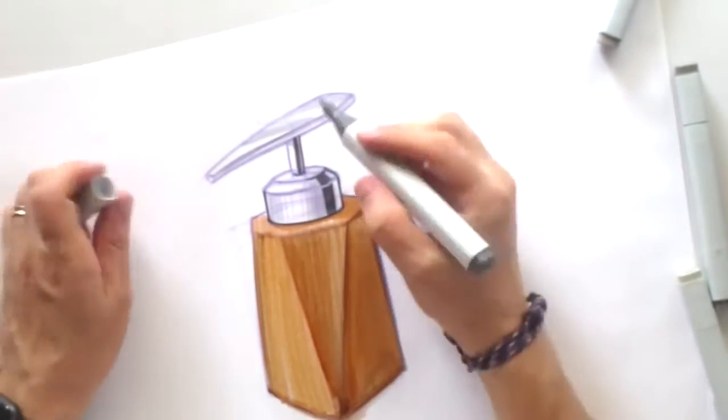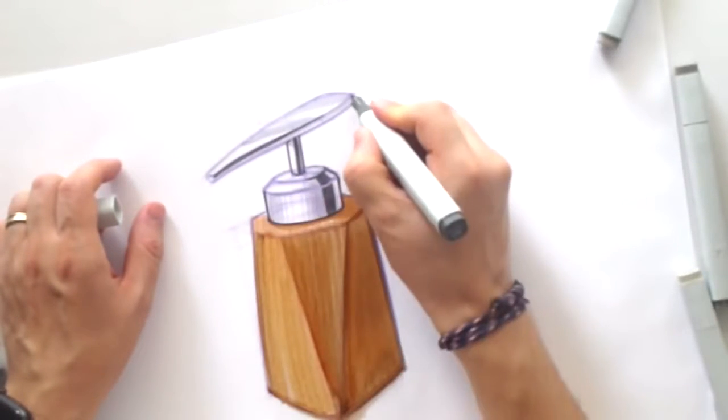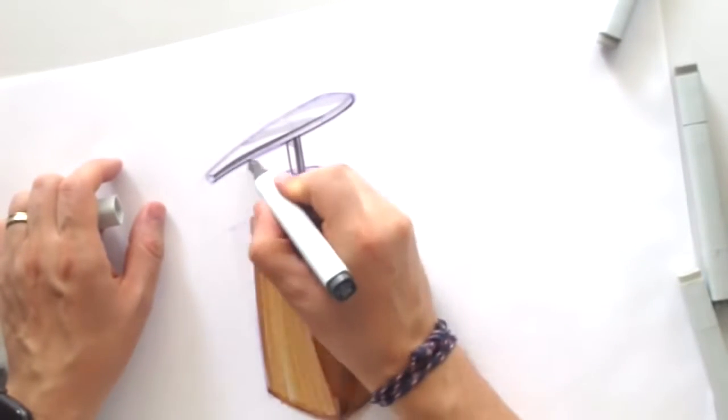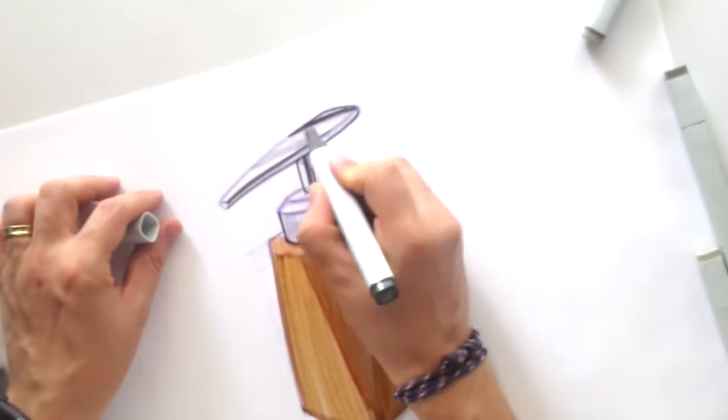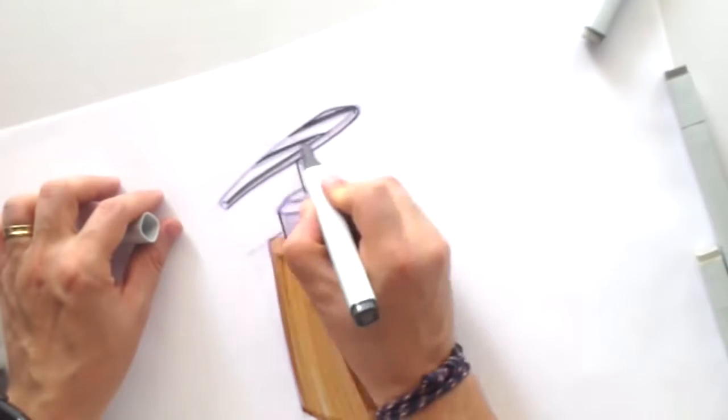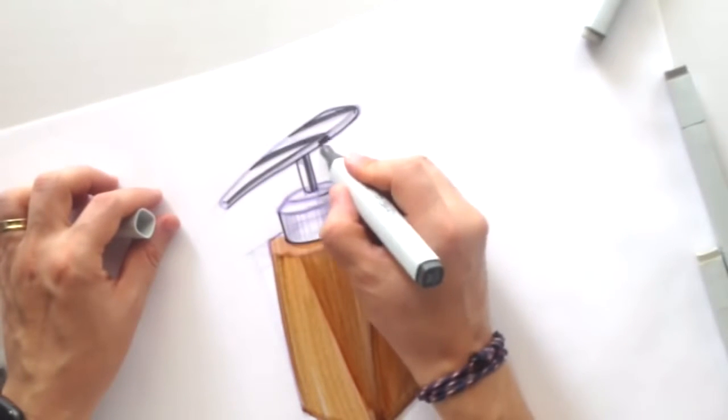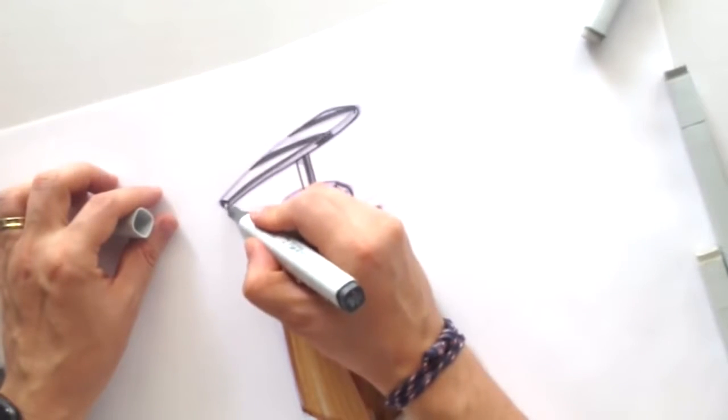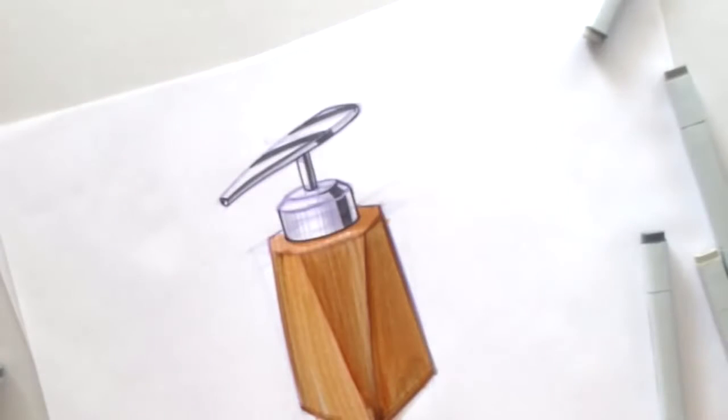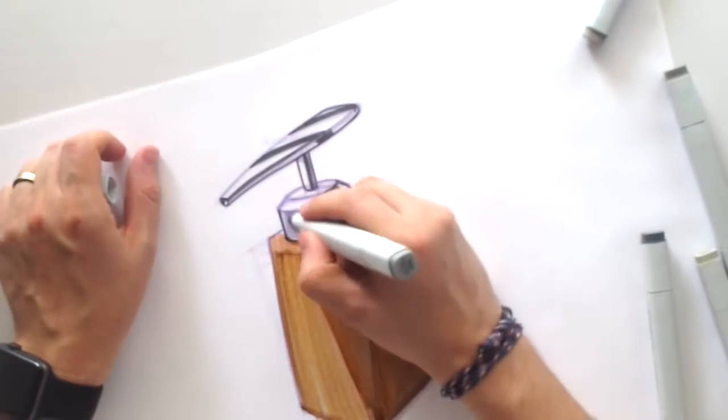Okay, well, let's continue with the metal part, make it kind of chrome stainless steel, finishing all the metal. So when we are doing the chrome finish, it's always very sharp and contrast combination between light, shadow and reflections.